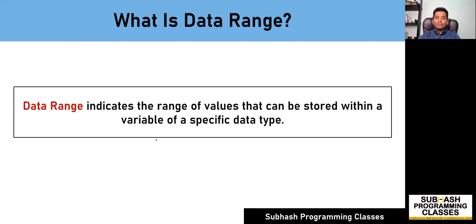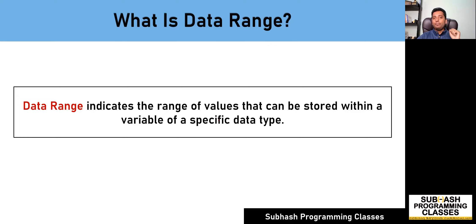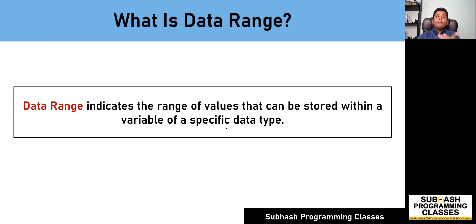First of all, what do you mean by a data range? Data range indicates the range of values that can be stored within a variable of a specific data type. It means data range will indicate the set of permissible values that can be stored in a variable of a specific data type. For example, in C language we have four different types: int, float, double, and char. The data range will indicate the possible range of values that can be stored in each of those variables.